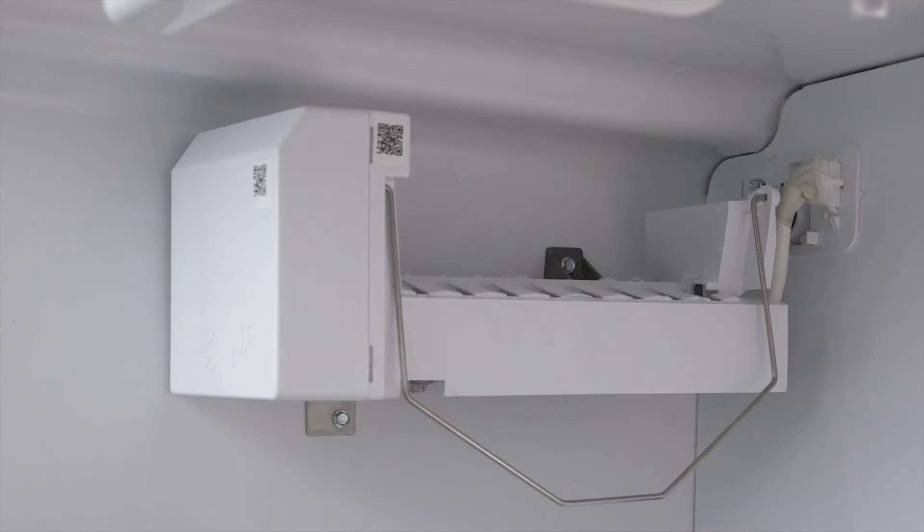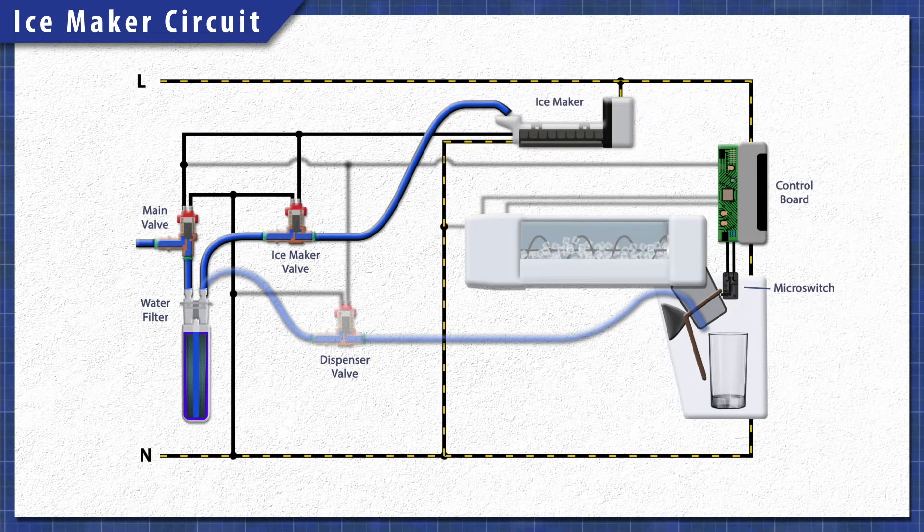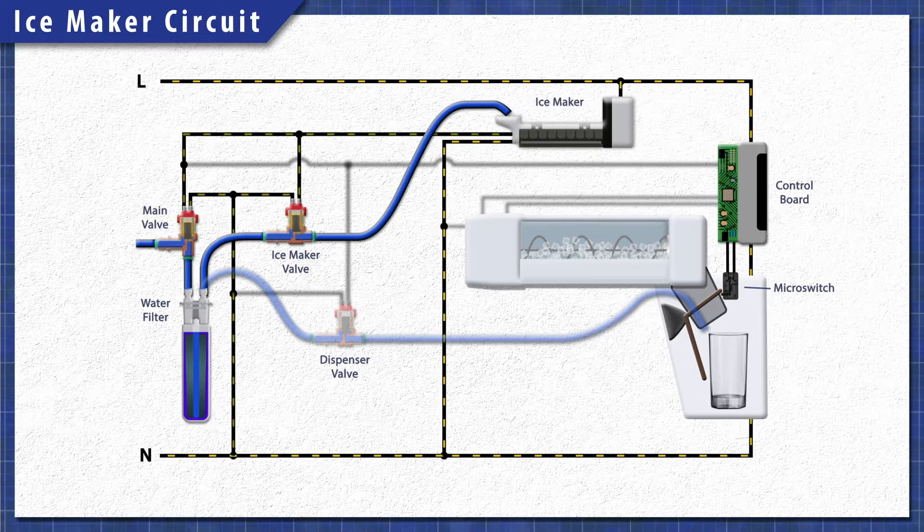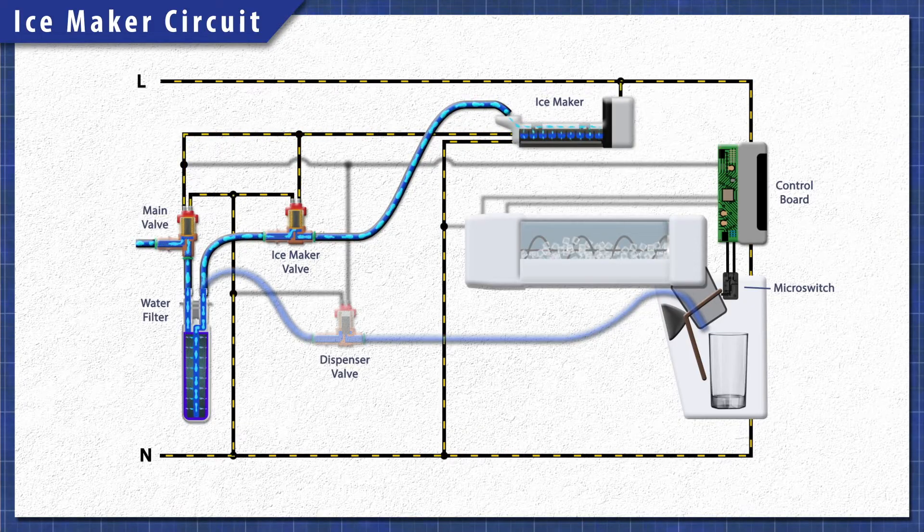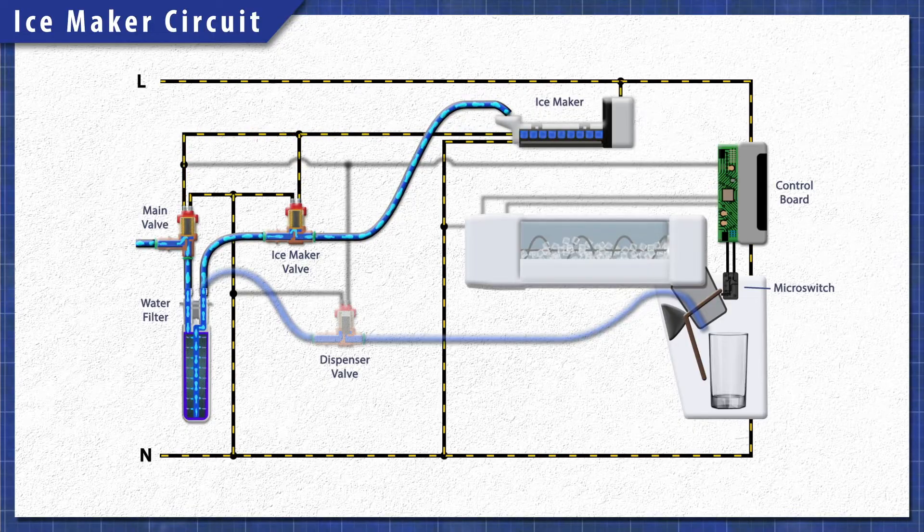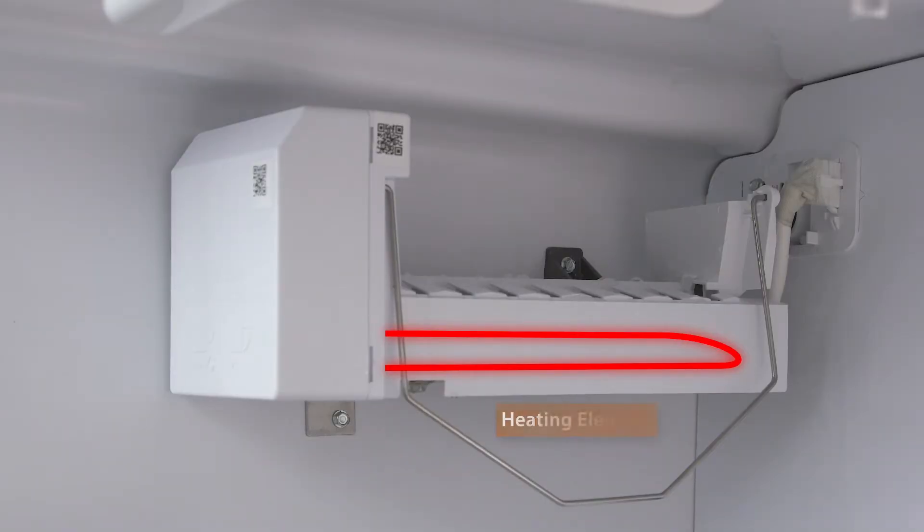All ice makers work in the same basic way. When ice is needed, power is sent to the water inlet valve. The solenoid energizes, and the valve opens for about 7 seconds, letting the water fill the ice cube tray. After the water freezes, the heating element temporarily warms up. This helps release the cubes from the mold.